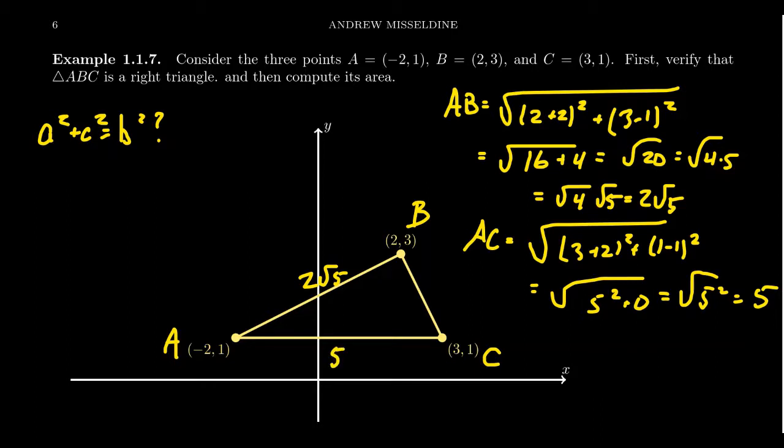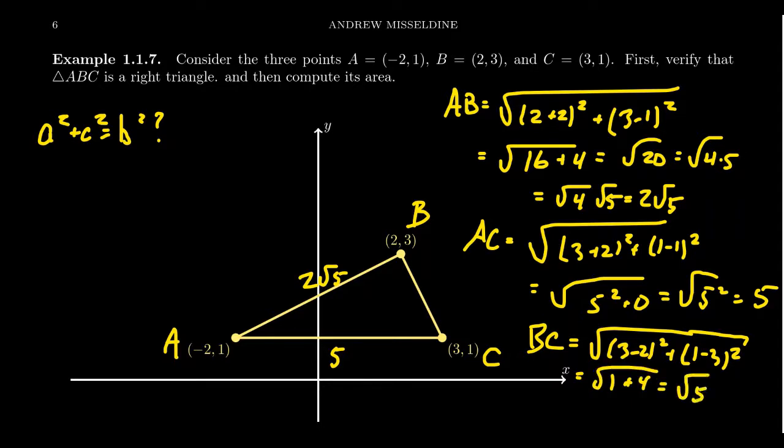And so let's do the last distance here. Let's do BC. Again, using the distance formula, you're going to get the square root here. Take the difference of the x-coordinates and then square it. So you're going to get 3 minus 2 squared plus, now take the difference of the y-coordinates, 1 minus 3 squared. And it doesn't matter who's first or who's second, because in the end, when you take the square of a negative, it'll be positive anyways. So 3 minus 2 is 1. 1 squared is 1. 1 minus 3 is negative 2. When you square that, you're going to get a positive 4. And so we get that the distance between B and C is the square root of 5.